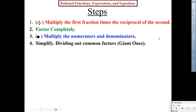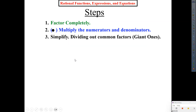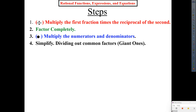Copy these steps down, please. Step one: multiply the first fraction times the reciprocal of the second. Step two: factor completely. Step three: multiply the numerators and denominators. Step four: simplify giant ones. Steps two, three, and four we already know how to do from the past two days. The only thing we're adding is step one. Division just adds that one extra step compared to multiplication.